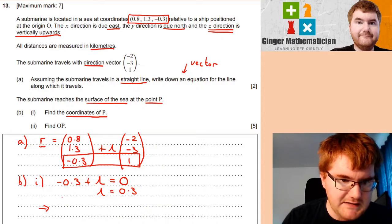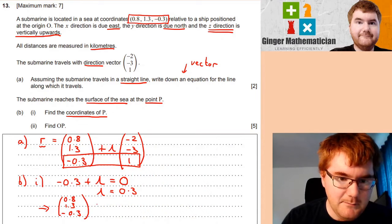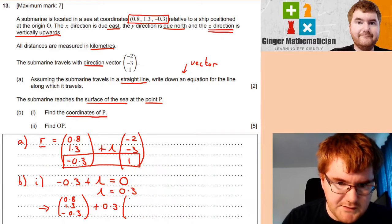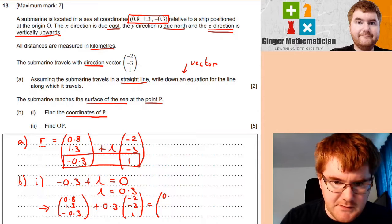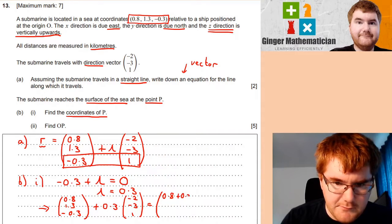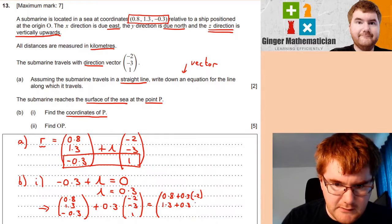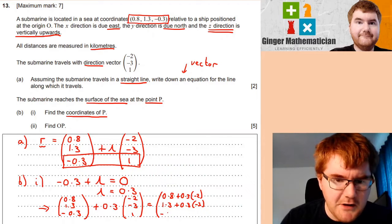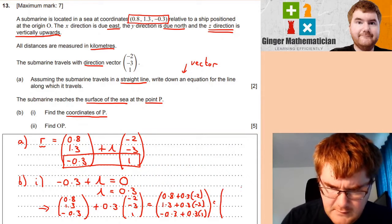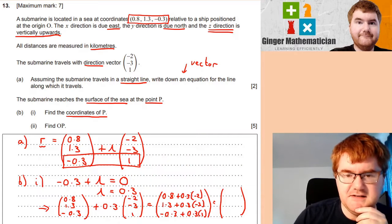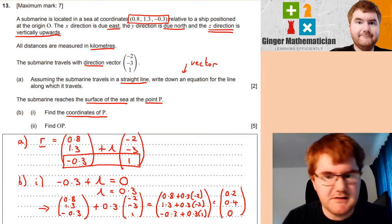By adding 0.3 on both sides, lambda equals 0.3. And all we're going to do at this point is put this back into our vector equation. So if we put this back in, we get (0.8, 1.3, -0.3) plus 0.3 times (-2, -3, 1). So we get 0.8 plus 0.3 times -2, which is 0.8 - 0.6 = 0.2. Then 1.3 - 0.9 = 0.4. And the bottom is 0, that's what we wanted.